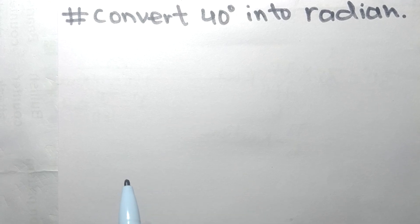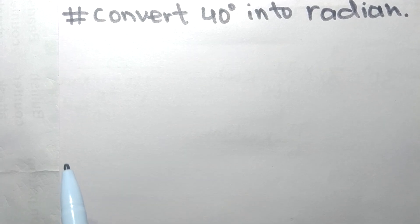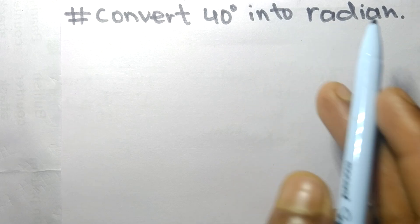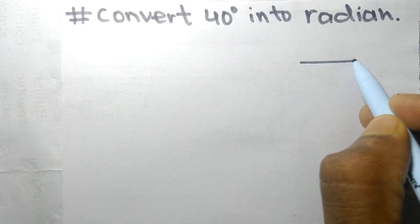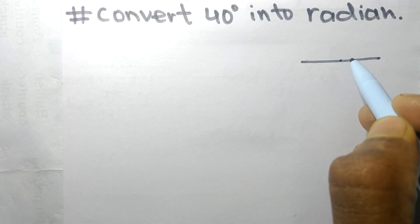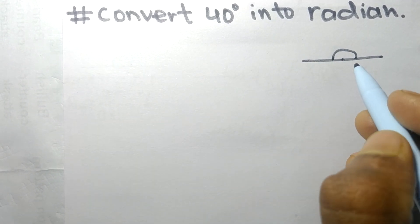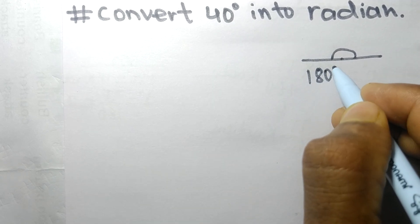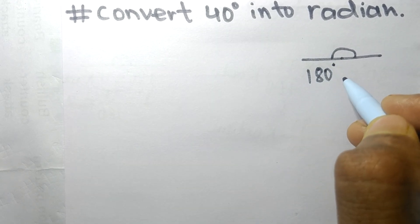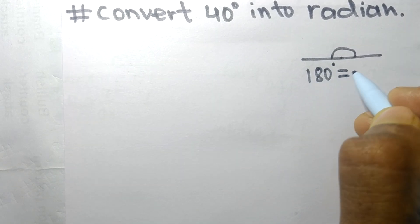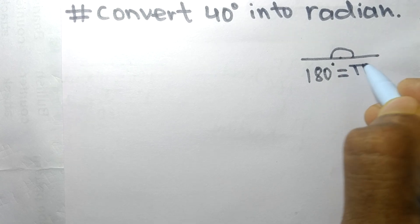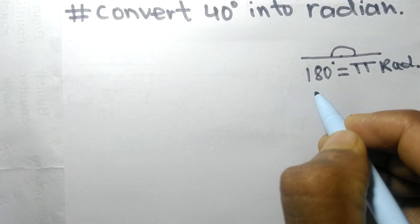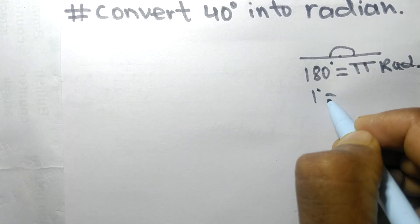Today in this video we shall convert 40 degrees into radians. In a straight line or in a semicircle, the sum of angles is 180 degrees, and it is equal to pi radians. So one degree is equal to pi by 180 radians.